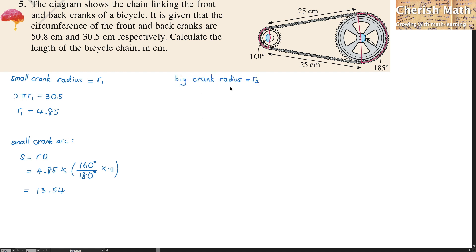For the big crank radius, I'm going to label it R2. This is going to be 2π R2 equals 50.8, and the value of R2 is 8.09. For the big crank arc,